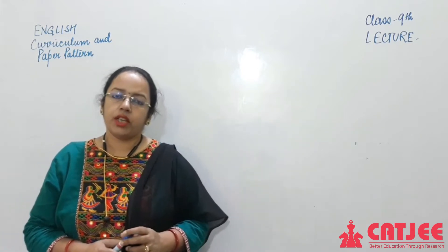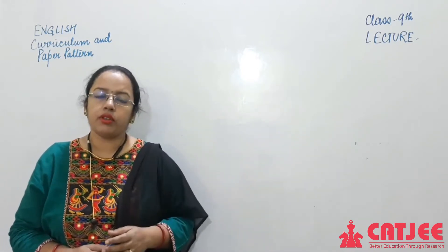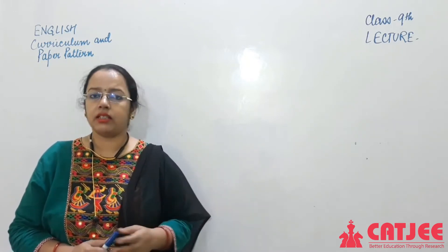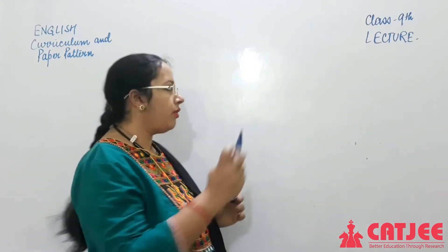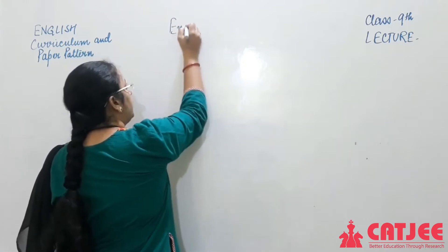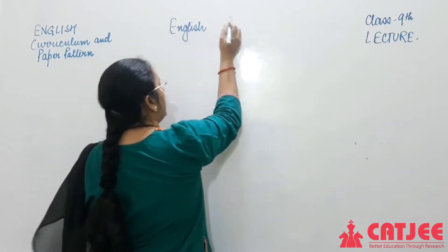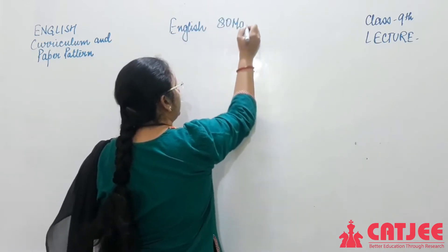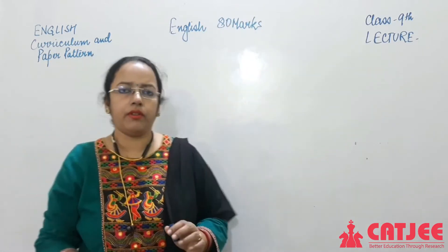So today we will be taking up this pattern in detail — which books we can use and which curriculum we can use. Now let's start. The English paper that will be your annual exam paper will be of 80 marks.